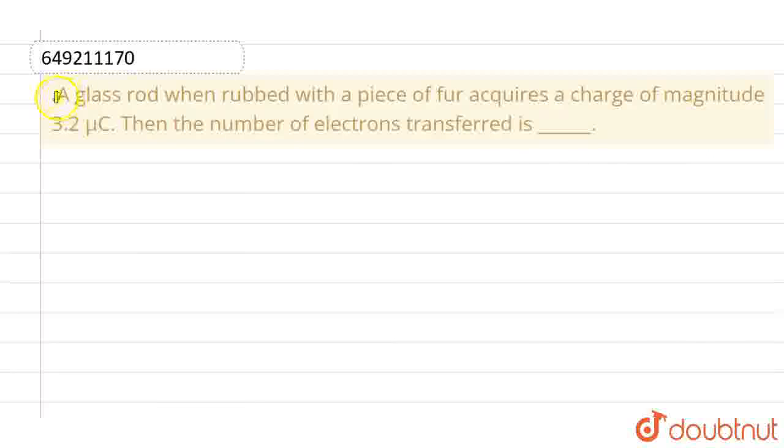Hello everyone, let's talk about this question. The question is: A glass rod when rubbed with a piece of fur acquires a charge of magnitude 3.2 microcoulomb. Then the number of electrons transferred is?